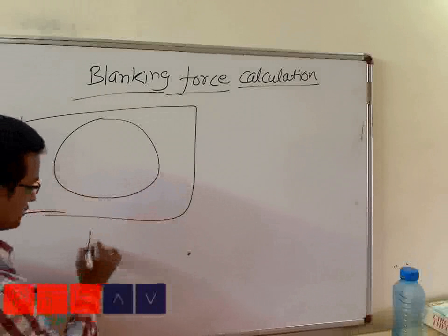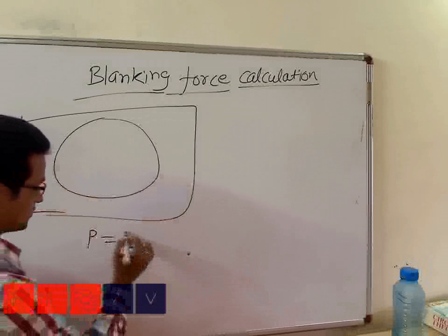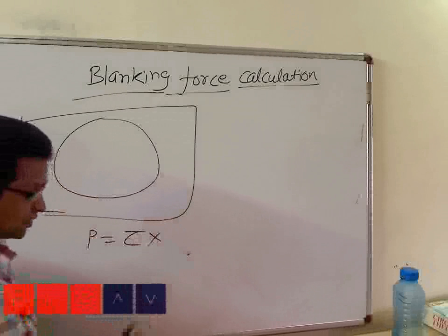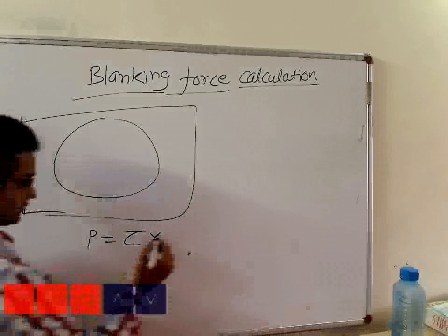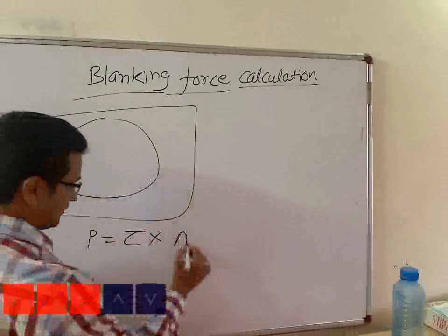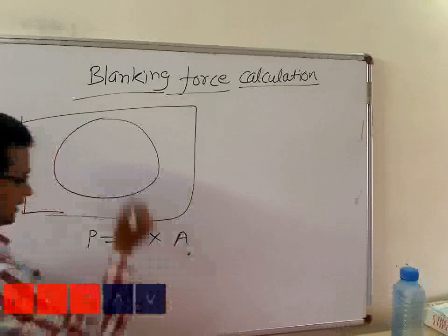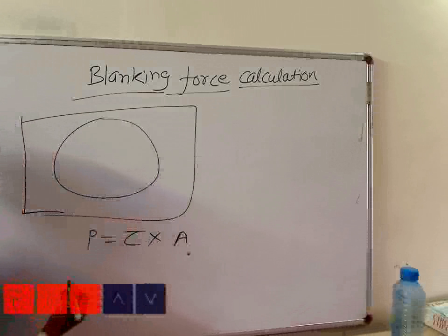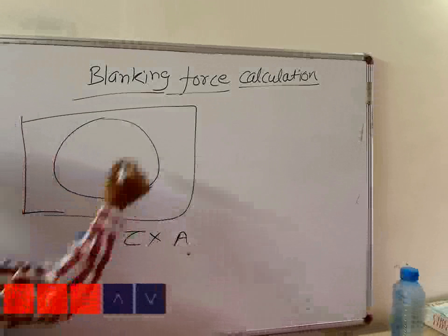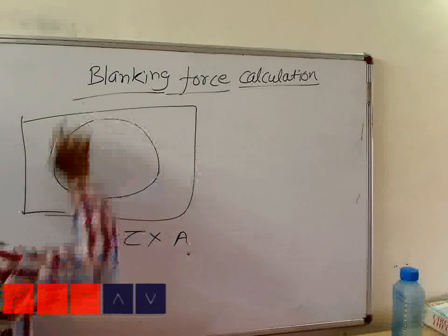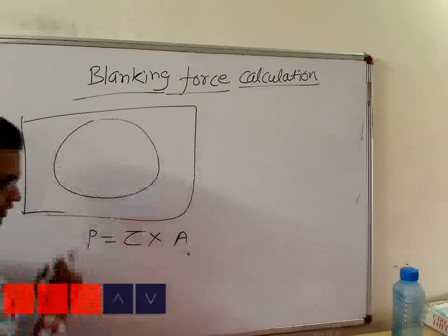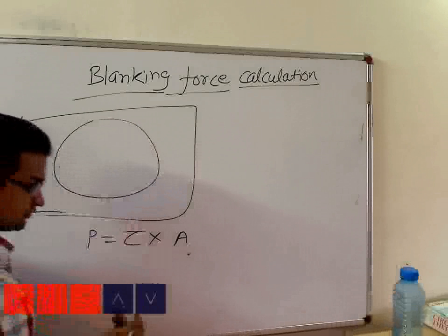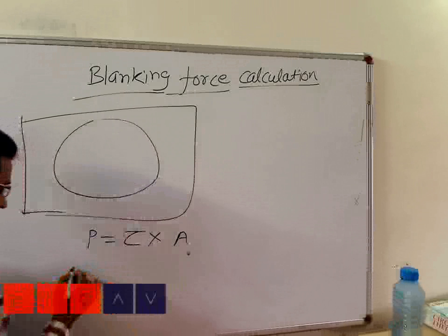The force calculation involves P equals tau — that is the shear strength of a material — multiplied by A. This A is not the area of the circle to be cut; for any cutout to be cut, it is the circumferential area. For a circle,